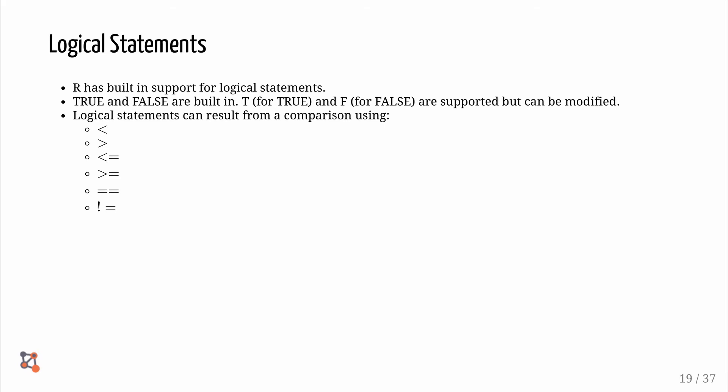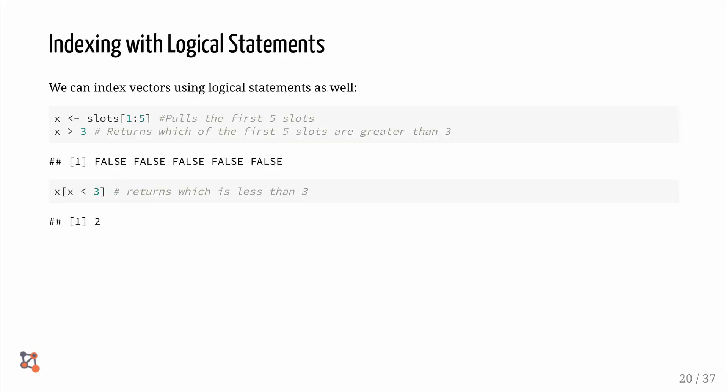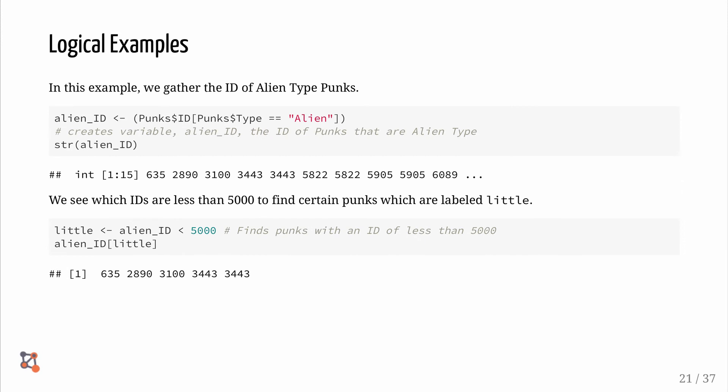Let's try indexing with logical statements. We can index vectors using logical statements as well. If we define a variable called x that has slots between 1 and 5, which pulls the total point for the first five players, and then we use a logical statement which says that x is greater than 3, this will return which of the first five slots are greater than 3. And if we use this statement, this will return which of the first five slots is less than 3.